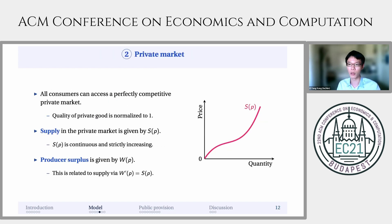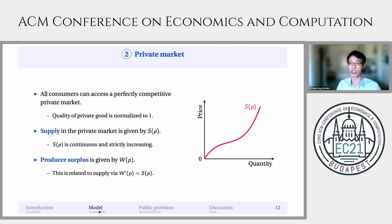Let me move on to the second component of the model, namely the private market. All consumers can access a perfectly competitive private market. The quality of goods sold in the private market is normalized to 1, and supply in the private market is described by the supply curve S, which is continuous and strictly increasing. I denote producer surplus in the private market by the function W, and by Hotelling's lemma, the supply curve must equal the gradient of the producer surplus function W.